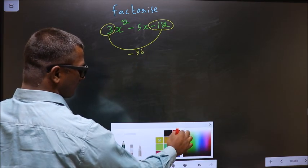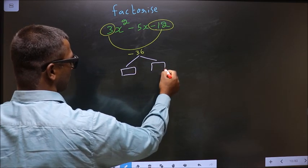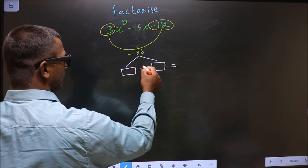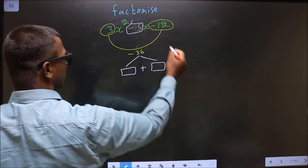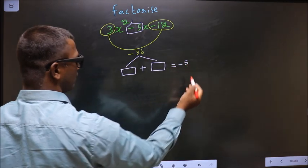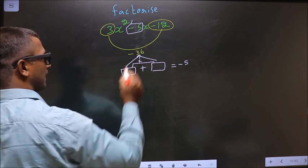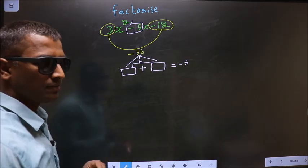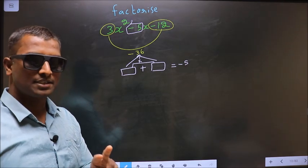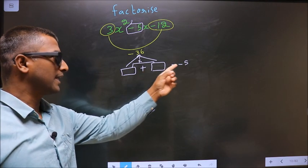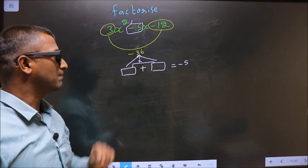Now you should look out for two numbers such that when you add these two numbers you should get the middle coefficient, that is -5, and also when you multiply these two numbers you should get -36. Look out for two numbers such that when you add you should get -5, when you multiply you should get -36.